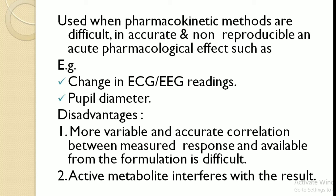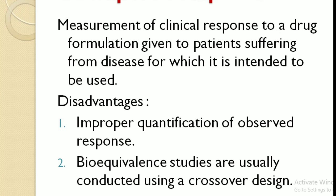Acute pharmacological response is used when pharmacokinetic methods are difficult, inaccurate, or non-reproducible. Acute pharmacological effects — such as changes in ECG, EEG ratings, and pupil diameter — are measured rather than blood or urine samples. The disadvantages of using acute pharmacological responses are that the responses are more variable, accurate correlation between the measured responses and bioavailability from the formulation is difficult, and active metabolites may interfere with the results.